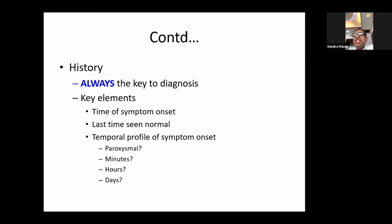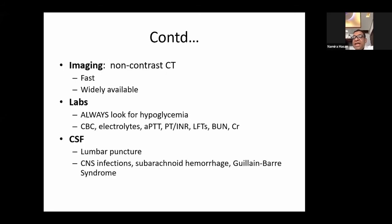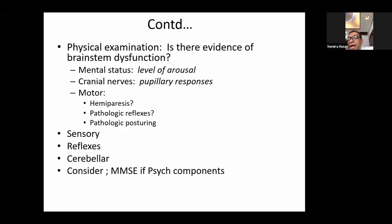The essential key elements for diagnosis: first is onset — time is key. When was the patient last seen normal is important, and what is the temporal profile of symptoms — is it minutes, hours, or days? On physical examination, assess mental status, particularly the level of arousal; examine the cranial nerves; examine the motor system for monoparesis or hemiparesis; check deep tendon reflexes and patient posture. Also examine the sensory system, cerebellar system, and consider a mini mental state examination if there are cognitive or psychological components.